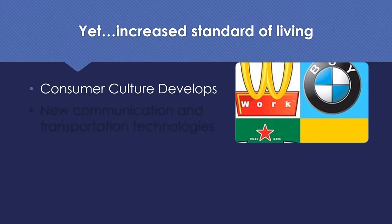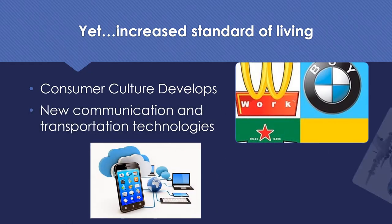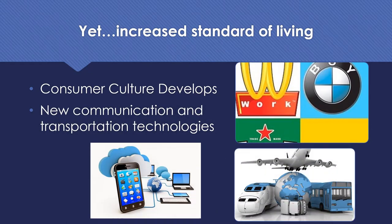European governments reduced class tensions by further expanding the welfare state: healthcare, maternity grants, and public housing were the norm. This consumerism worked to level Western society. We're going to see new communication and transportation technology and a gadget revolution. For example, in the 50s and 60s, Europeans bought washing machines, vacuum cleaners, refrigerators, dishwashers, radios, TVs, and stereos.